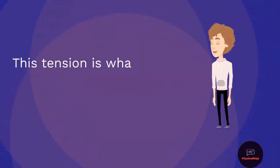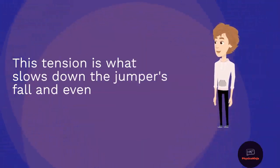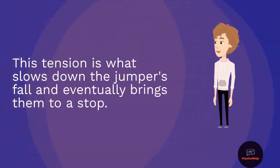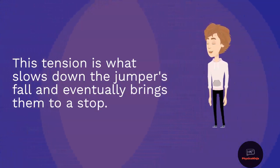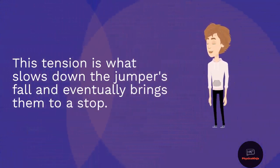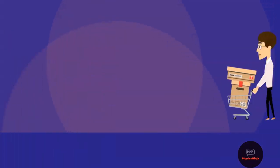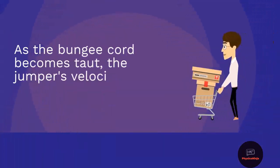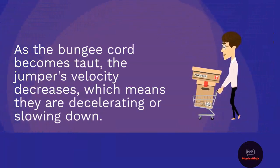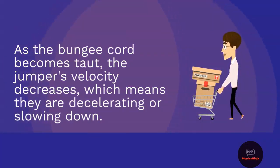As the bungee cord stretches, the tension in the cord increases. This tension is what slows down the jumper's fall and eventually brings them to a stop. As the bungee cord becomes taut, the jumper's velocity decreases, meaning they are decelerating or slowing down.